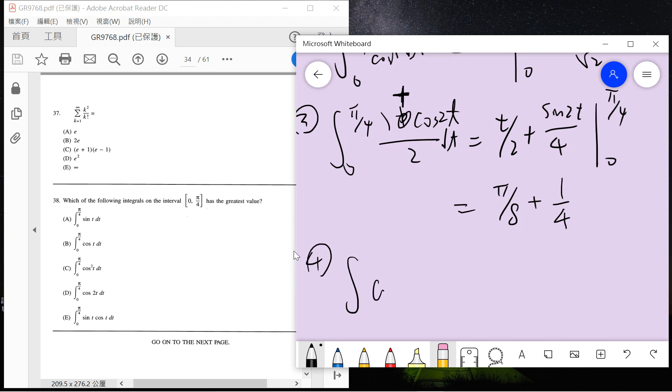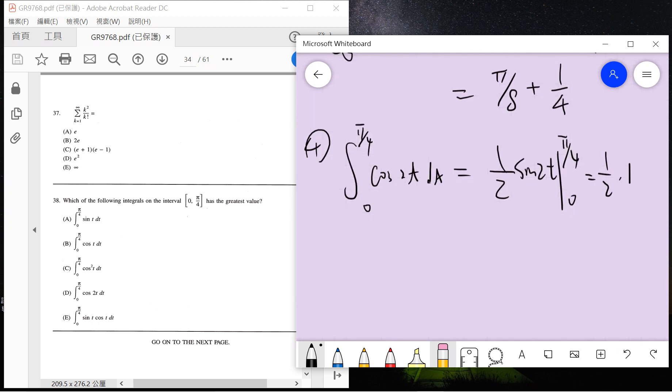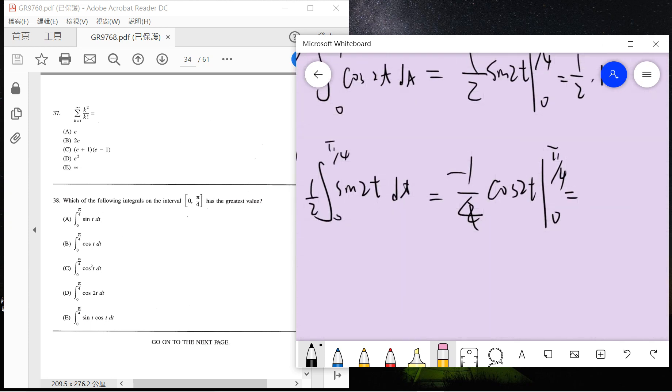And the fourth one is cosine 2t dt from zero to pi over four. So this is a half sine 2t evaluated at pi over four and zero. This is a half sine pi over two which is one. The fifth is a half sine 2t dt, so it's minus one over four cosine 2t. At pi over two it's zero minus zero plus one, so it's one over four.